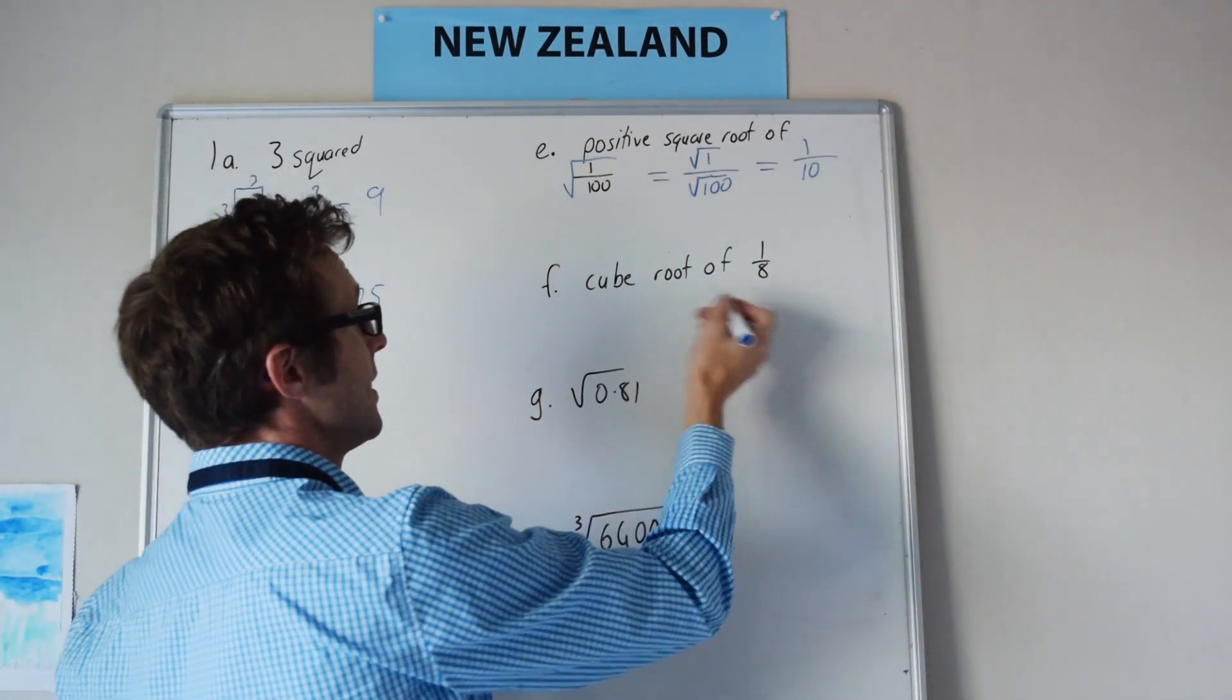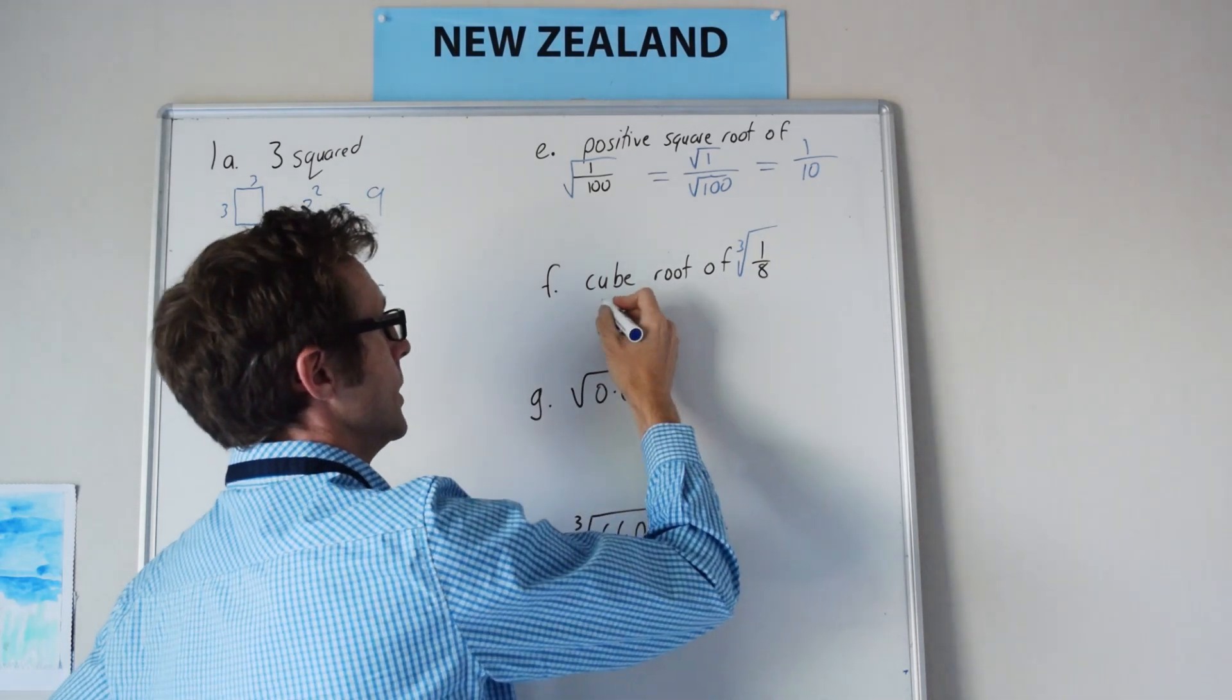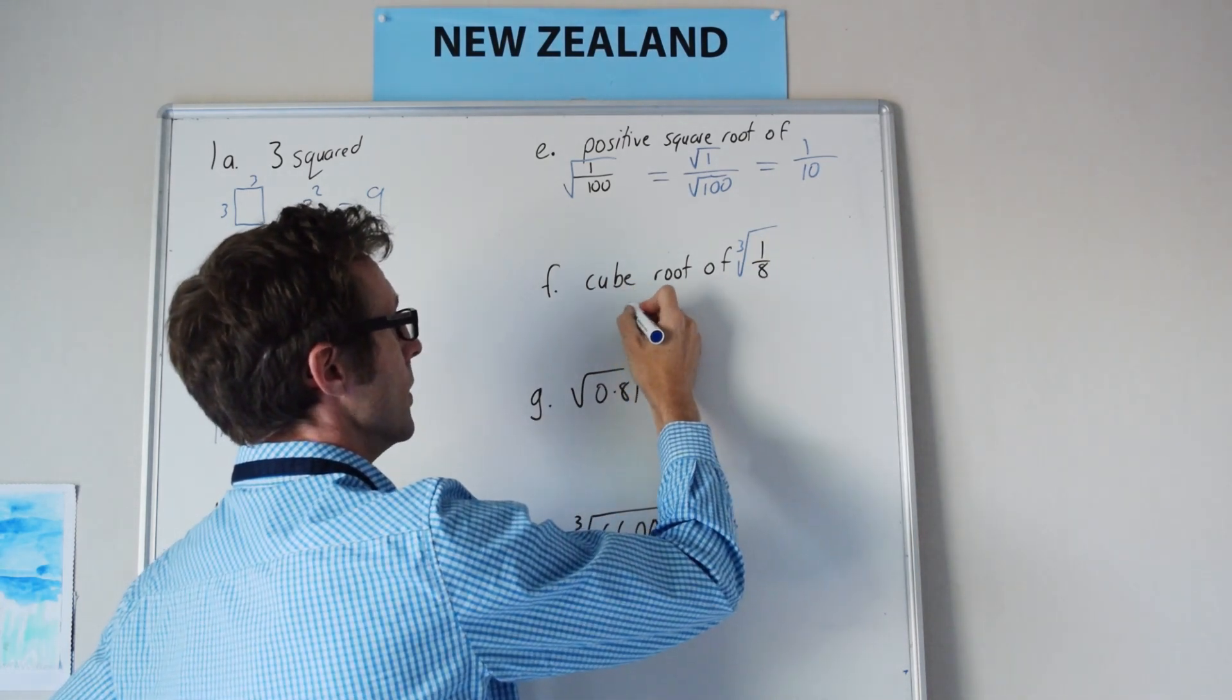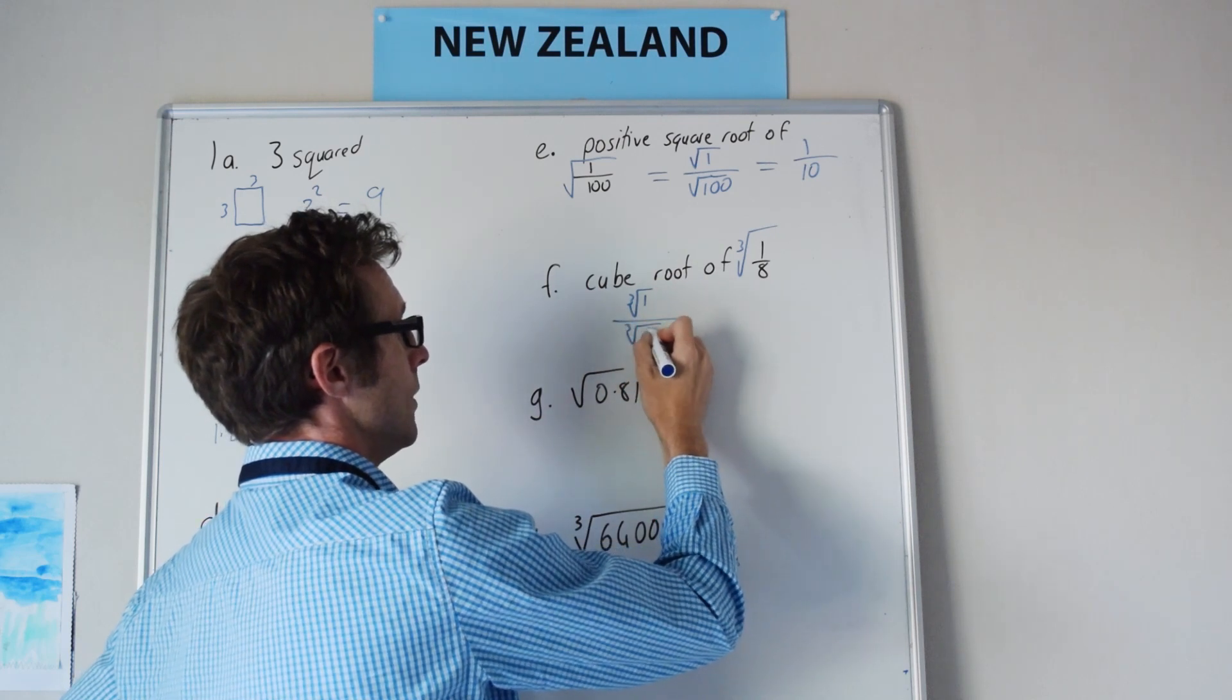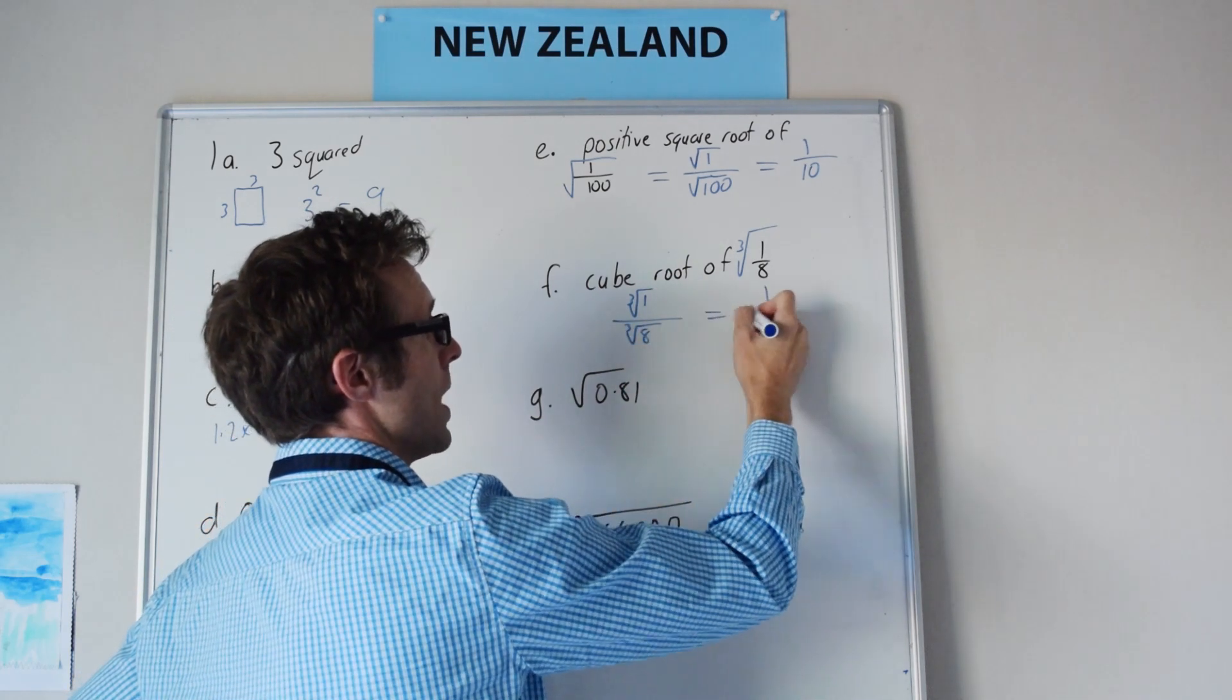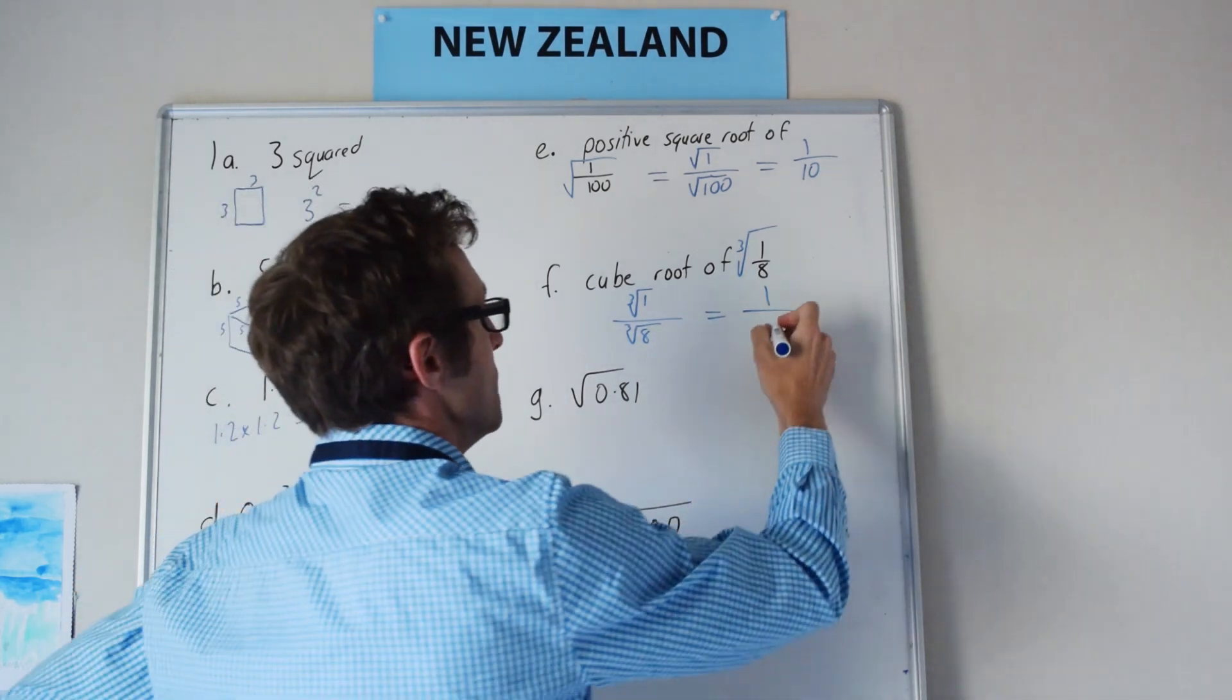Same kind of principle applies to here, the cube root of 1 eighth. So we will go cube root of 1 over the cube root of 8. Cube root of 1 is 1, cube root of 8, what times what times what makes 8, this is going to be 2.